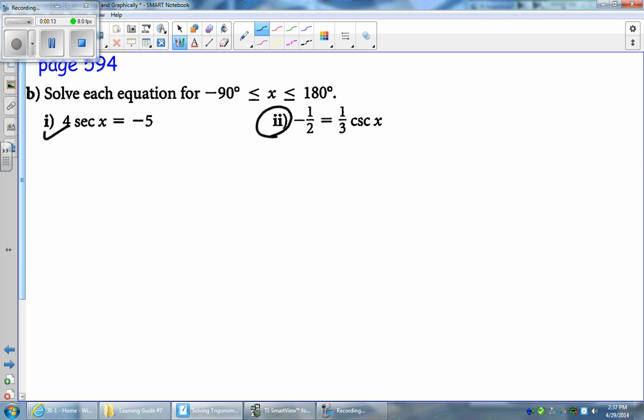So I want to find all values of x in this domain where the cosecant of x times 1/3 will give you negative 1/2. The first thing I'm going to do here is actually convert this cosecant x to a primary trigonometric ratio. So we should all know by now that the cosecant of any angle is the same thing as 1 over the sine of x.